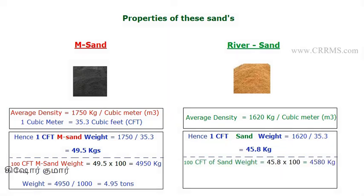So 45.8 kg is the weight for one cubic foot of river sand. Multiplying by 100 gives 4580 kg — that is the weight of 100 cubic feet of river sand. Dividing by 1000 to convert to tons gives 4.58 tons.